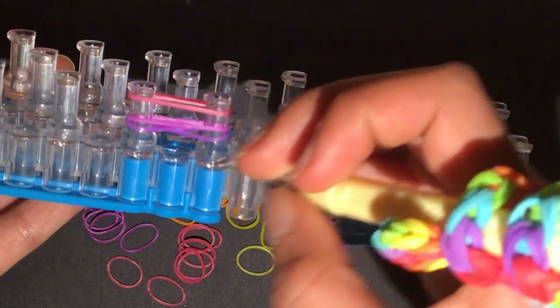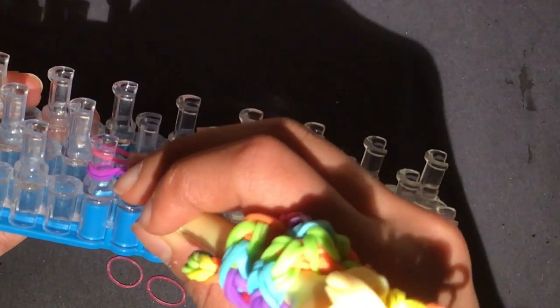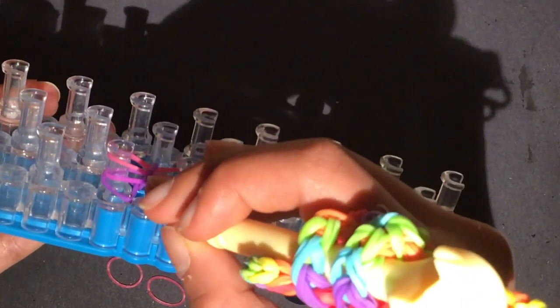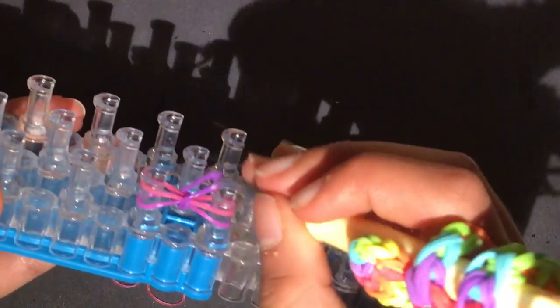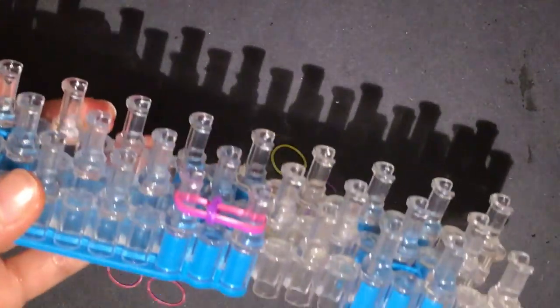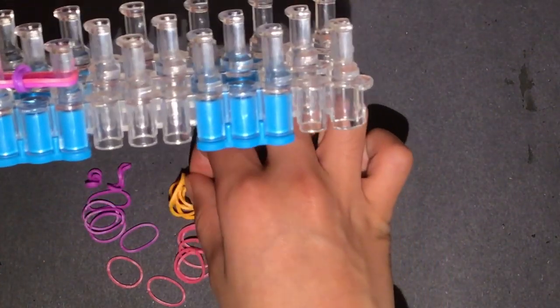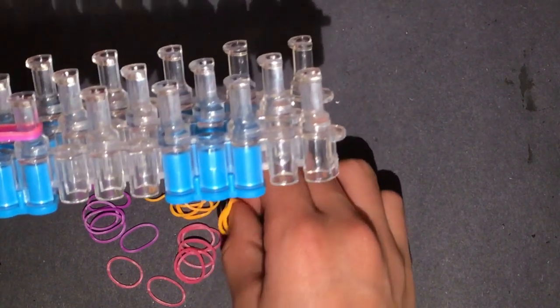Then you want to take your bottom band and hook it over, and then take the bottom band on this side and hook it over. Then you can push down your bands. Remember you want to have three bands so we're gonna put on our next color, which for me is going to be orange because I'm gonna have sort of like a sunset effect.